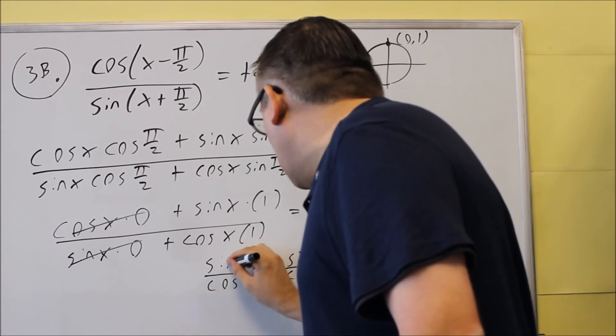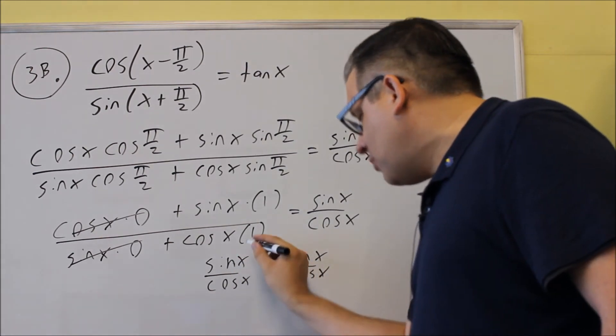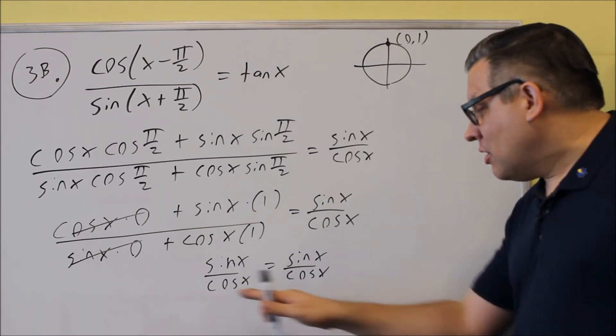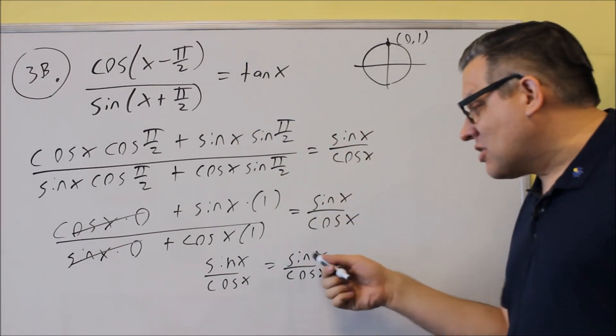On the test, it doesn't matter if you make both these tangent, or if you make them both sine over cosine like we have here. As long as you have both sides equal and the work that you show is correct, that's all I'm looking for.